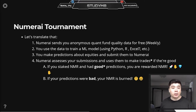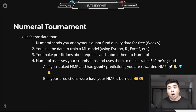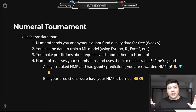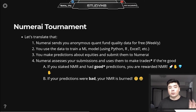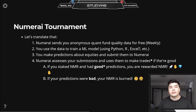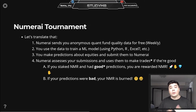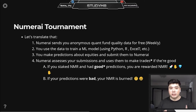Step two: you use the data to train a machine learning model. I personally like Python — that's what I have the most experience with — but there are a lot of people who use R, and I've even seen some really cool stuff done in Excel. Step three: you make predictions about equities and submit them to Numerai. We don't know exactly what we're predicting on, but it's important to note that all we actually submit is our predictions — we don't share our strategy with them.